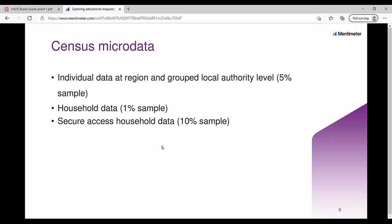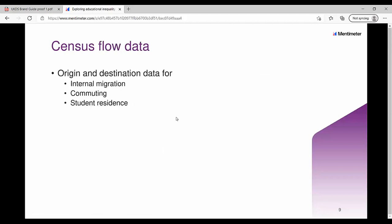Microdata is a set of variables linked to a person. For those of you who've opened the file, there are around 80 to 90 variables covering aspects of individuals and households. The two files available in 2011 and that will be available in 2021 are region and grouped local authority level — a 5% random sample of the census data. There's also going to be for the first time a household dataset released on the end user license as a 1% sample, a secure access household dataset as a 10% sample, and flow data capturing origin and destination data, particularly for internal migration, commuting, and student resident places.